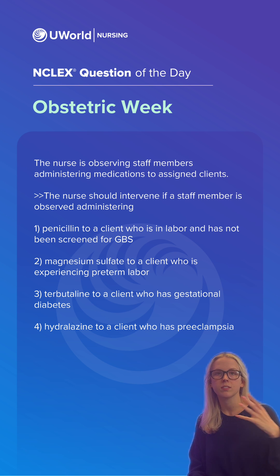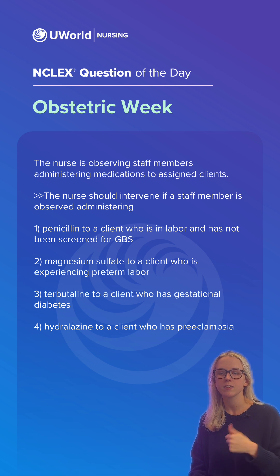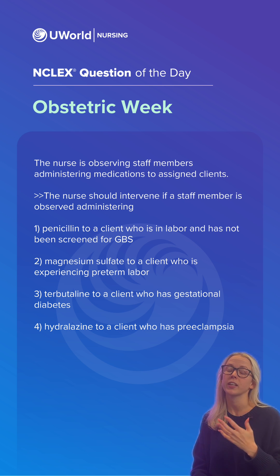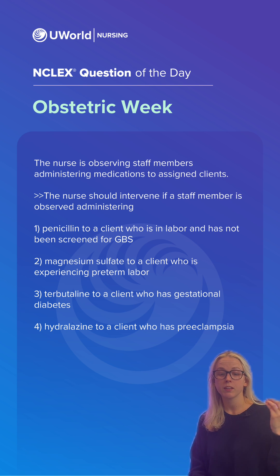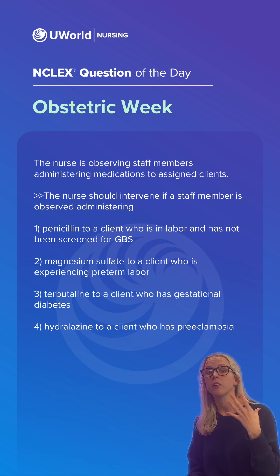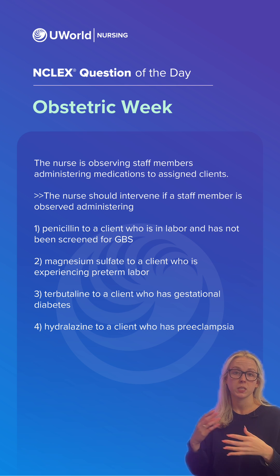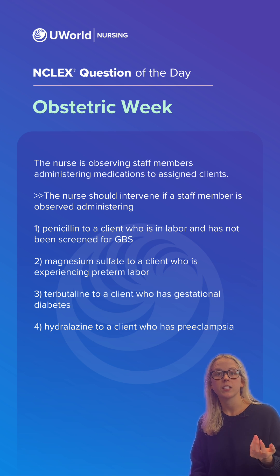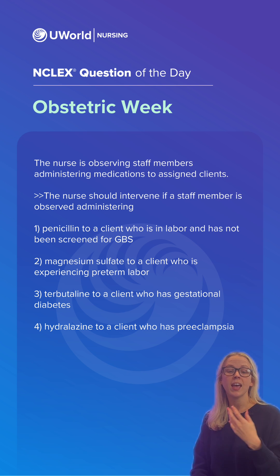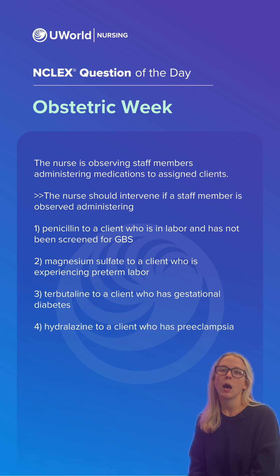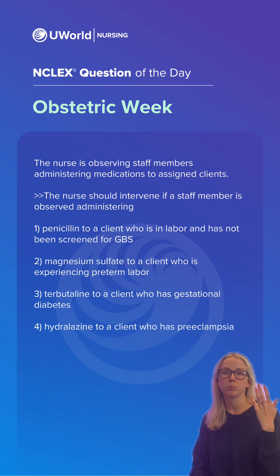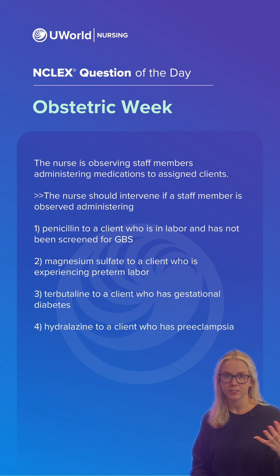Options one, two, and four are all safe. We give penicillin to GBS-positive clients as well as those who have not been screened — this is safe to give prophylactically. Option two: we give magnesium sulfate as fetal neuroprotection, specifically for cerebral palsy prevention, for clients experiencing preterm labor. Lastly, hydralazine is an antihypertensive that helps reduce hypertension in a client with preeclampsia and is safe to give during pregnancy.